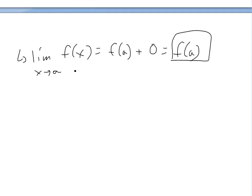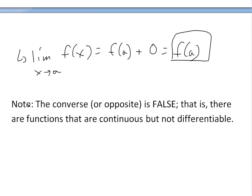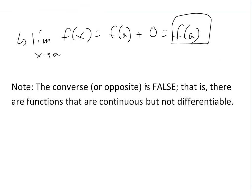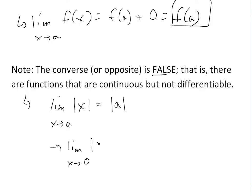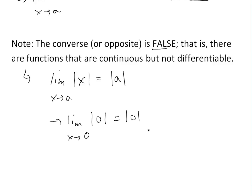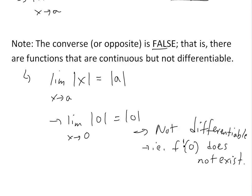Make sure you watch the video on continuity to see how this definition applies. One important note: the converse of this theorem is false. There are functions that are continuous but not differentiable, so you cannot say that because a function is continuous it must be differentiable. For example, as shown in an earlier video, the absolute value function f(x) = |x| is continuous — the limit as x approaches 0 of |x| equals |0| — but it is not differentiable at zero because the derivative at zero does not exist.